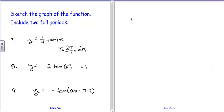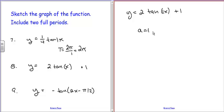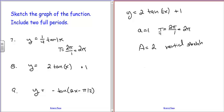Next: y equals 2 tangent of x plus 1. Here we have a vertical stretch with amplitude 2, no change in period so it stays 2π, and a vertical shift of plus 1. With A equal to 1, the period is 2π over 1, which is 2π. The amplitude is 2, giving a vertical stretch, and C equals 1 is a y-shift up by 1.